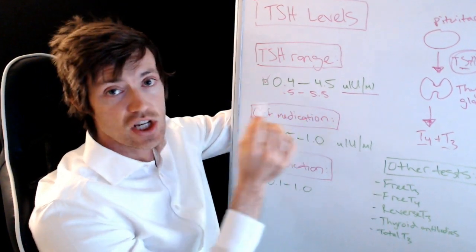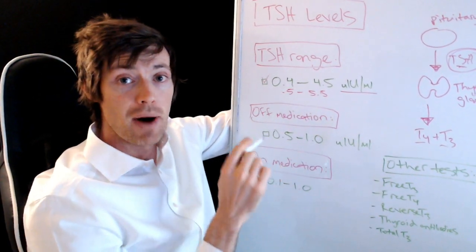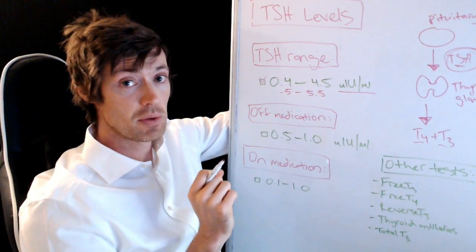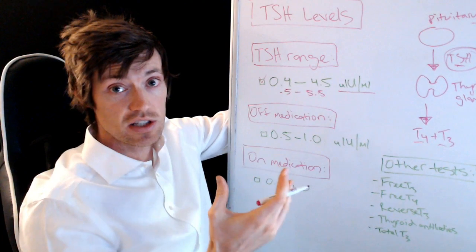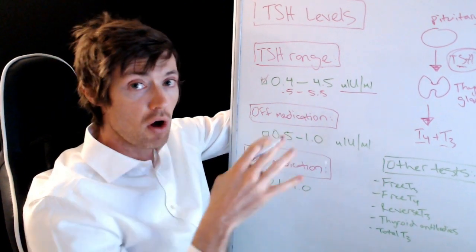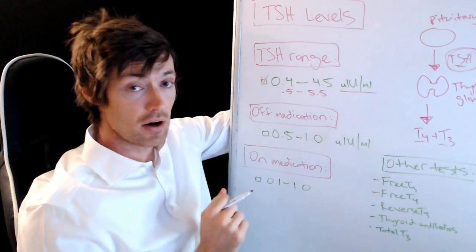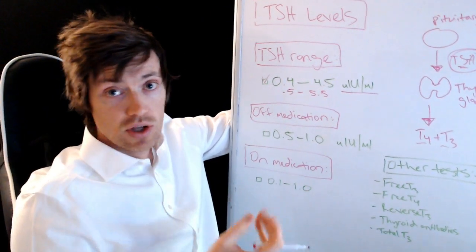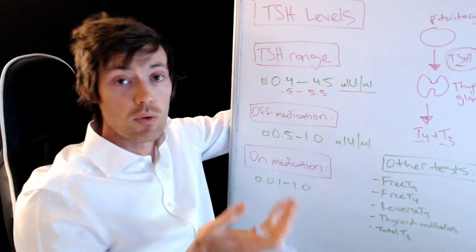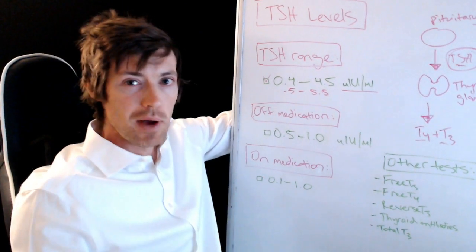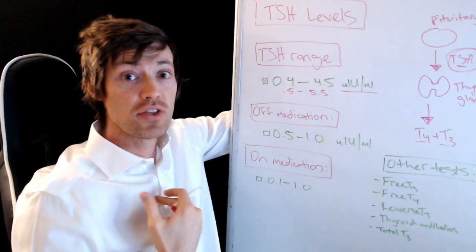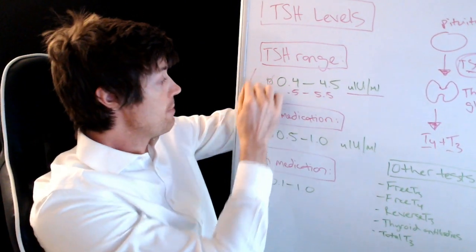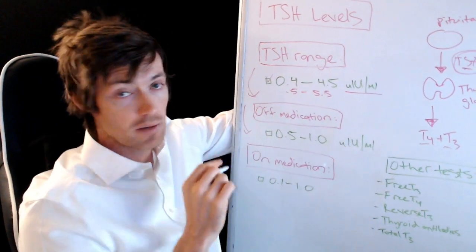So why does this matter? First of all, because the range is produced and defined by local people in your area. And this includes both healthy and unhealthy people. So when you're looking at this huge range, it's statistically created, and it's created to include all these people. So when you are compared, your lab test is compared to other people, you might be compared to a 70-year-old or to a 50-year-old with heart failure or anything else.